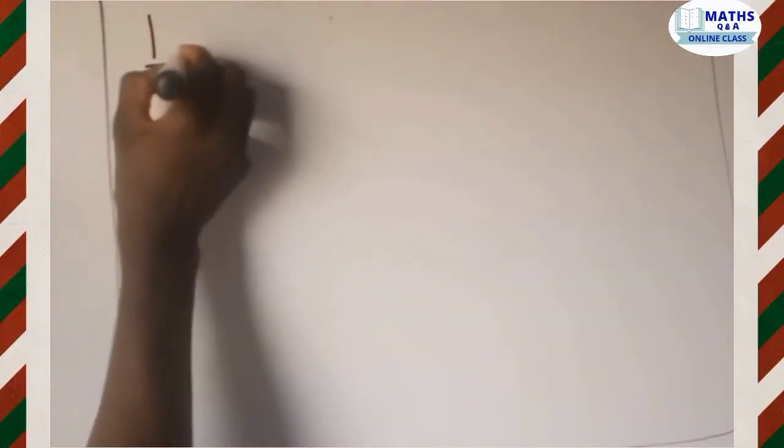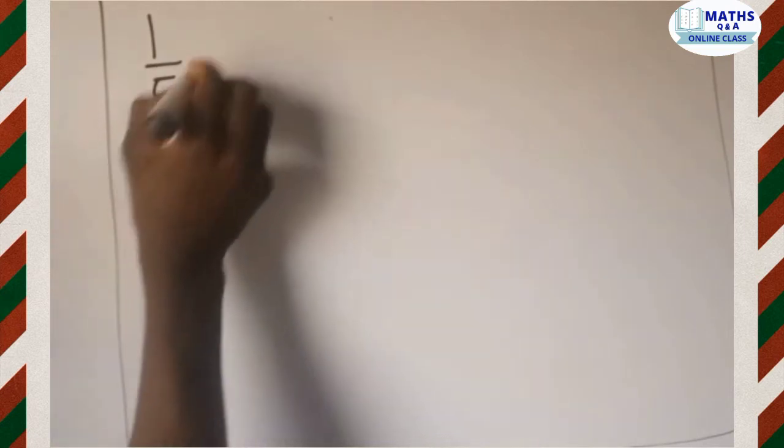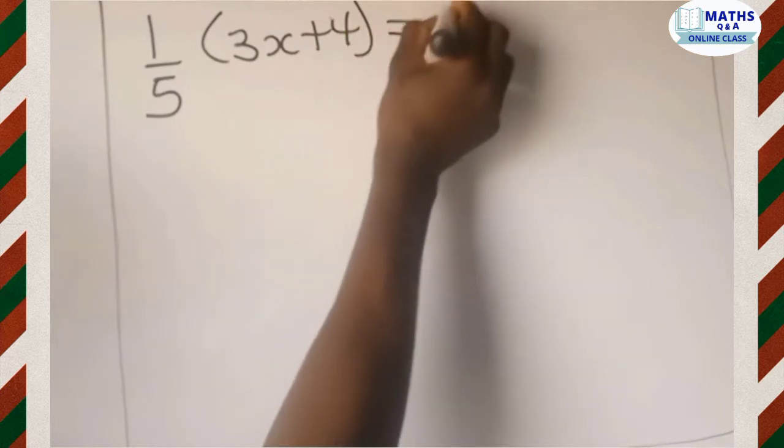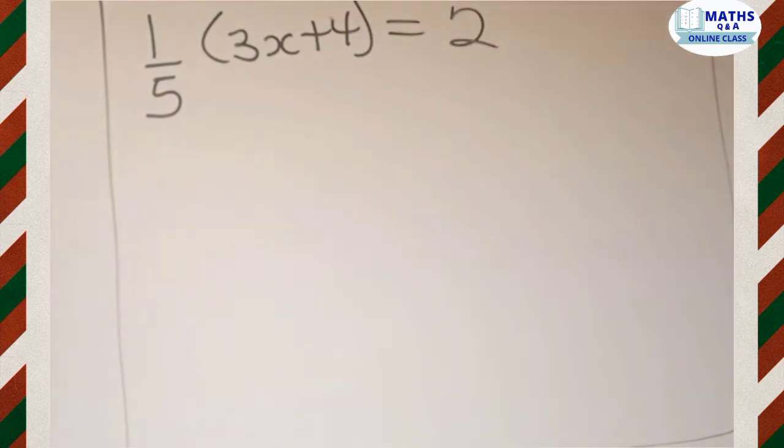So we are given one-fifth of 3x plus 4 and that is equal to 2, and we are to find the truth set of this expression. What we are going to do is first find the LCM for this question.